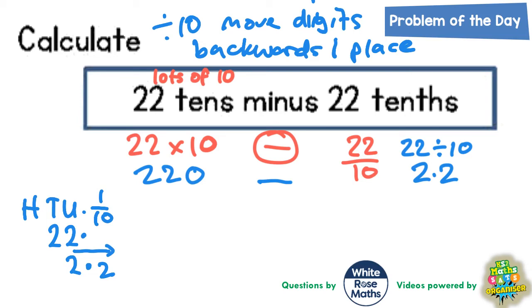Now, back to the original problem. So, 22 tens is 220 and 22 tenths is 2.2. So, what we're actually doing is we're subtracting 2.2 from 220. Now, the easiest way to do this is just to take the 2 off first. So, 220 take away 2 would be 218.